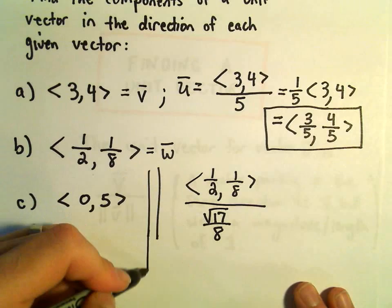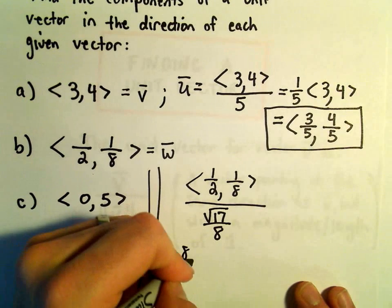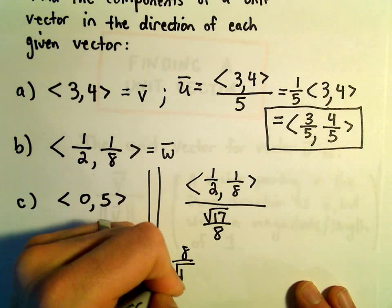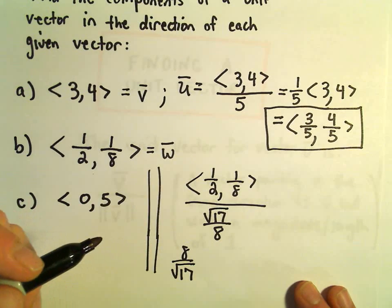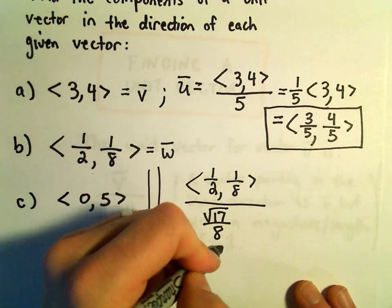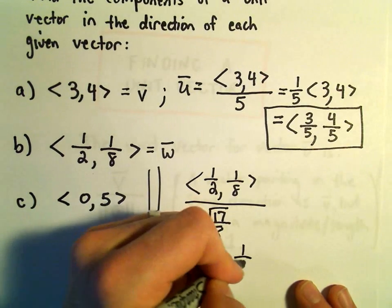But, again, when you're dividing by a number, that's the same thing as multiplying by the reciprocal. So, I'm going to take 8 over root 17, and I'm going to multiply that by 1 half and by 1 eighth.